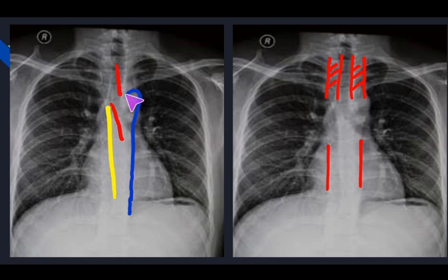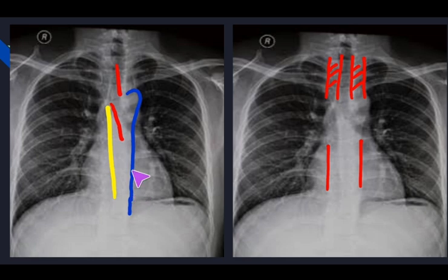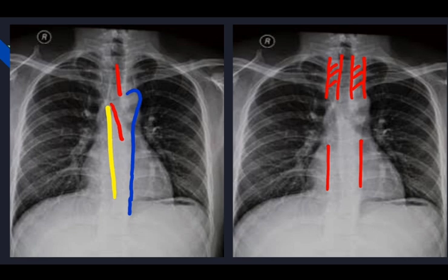Another line to identify is that formed by the descending thoracic aorta. The aortic knuckle continues inferiorly as a straight line along the left paravertebral border to form the descending thoracic aorta. Another important line is the azygoesophageal line, located posteriorly between the azygos vein and the esophagus. These lines are important for identifying mediastinal masses and their location. Any lesion that obliterates the azygoesophageal line is understood to be in the posterior mediastinum.